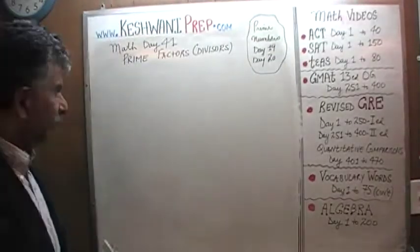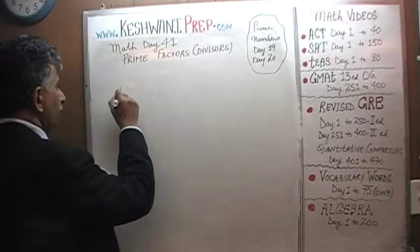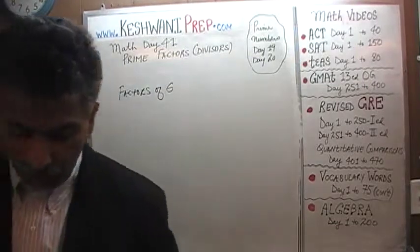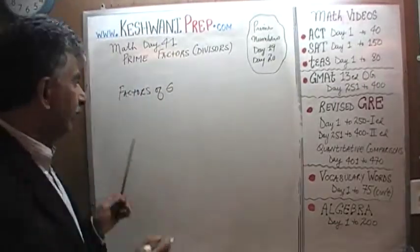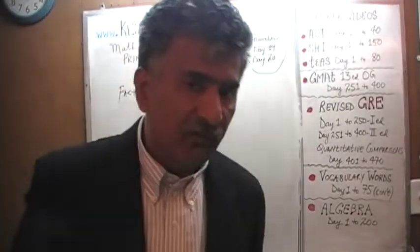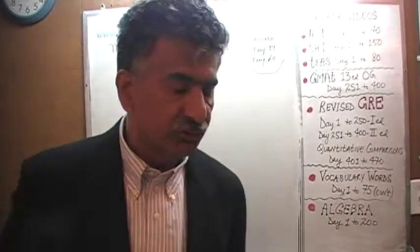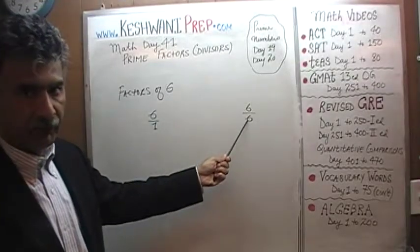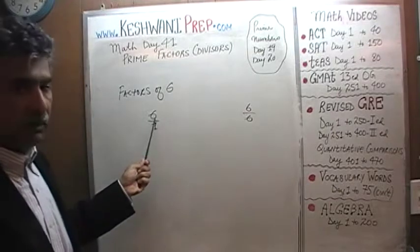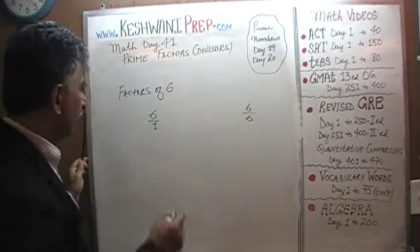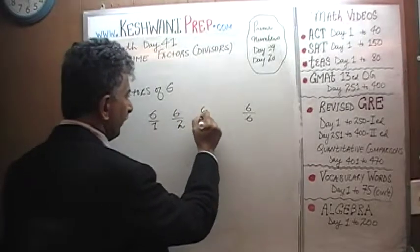Now let's first list the factors of 6. Factors of 6 simply means all the numbers that we can divide 6 evenly into. 6 can be divided evenly by 1. Whenever somebody asks you to give the factors of a number, always start your list with 1 and always end your list with the number itself, because any number is evenly divisible by 1 and by itself. Then you list all the others. 6 can also be divided by 2 and by 3.